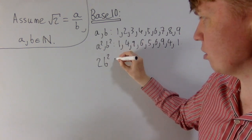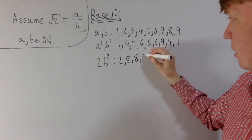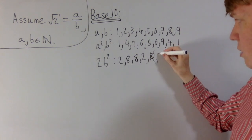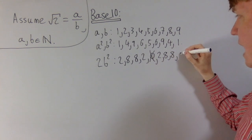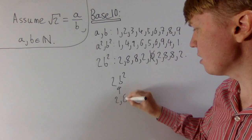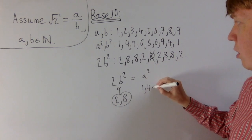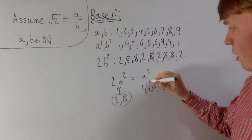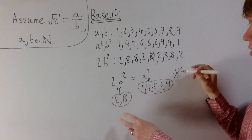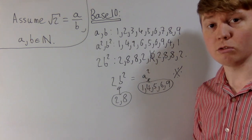Then it gets interesting when we look at the last non-zero digit of 2b². You could get a 2, or an 8 (since 2×9=18), or 2 (since 2×6=12). Note that 2×5 gives a 0, which is no good since this is supposed to be the last non-zero digit. So the last non-zero digit of 2b² has to be either 2 or 8. But 2b² is supposed to equal a², and the last non-zero digit of a² must be 1, 4, 5, 6, or 9. There's no overlap — contradiction — so root 2 is irrational.